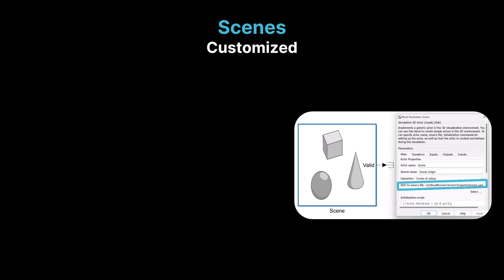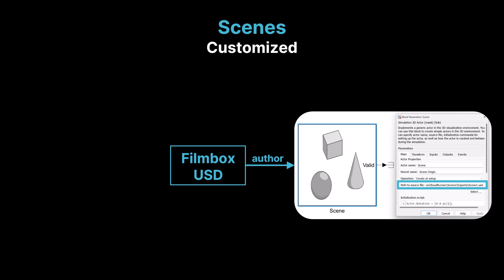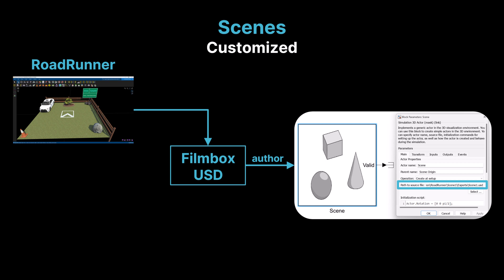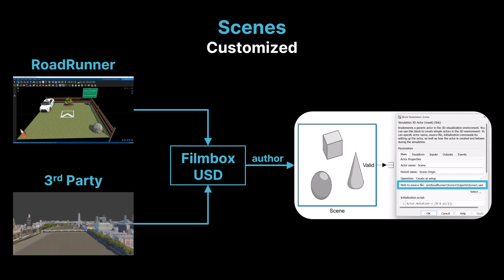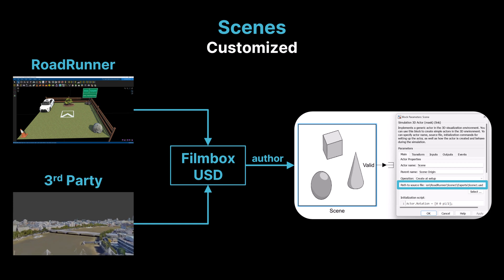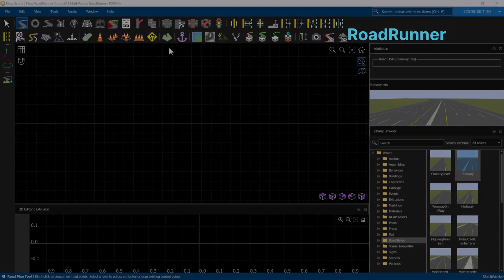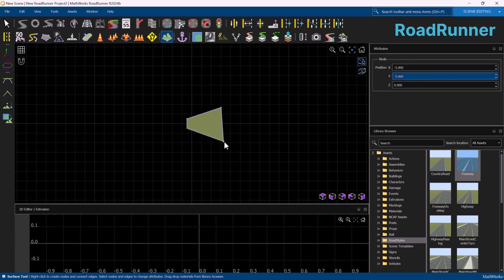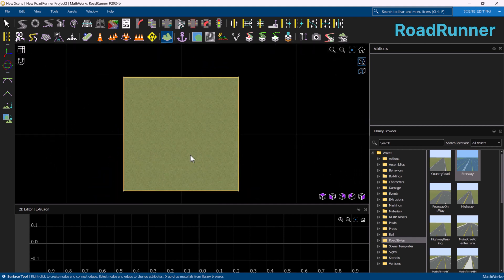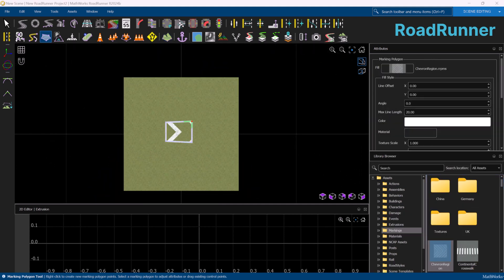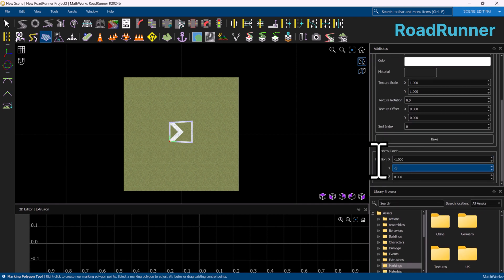We can also import custom scenes by specifying the path of the source file in the Simulation 3D actor block. The source files can either be filmbox (.fbx) or USD (.usd) files. One option is to use Roadrunner, a MathWorks product designed for creating 3D scenes and road networks. Alternatively, you can use third-party tools like Blender or obtain assets from online marketplaces that provide filmbox or USD files. In this example, we demonstrate how to create a simple yet realistic 3D scene in Roadrunner, a powerful tool for designing 3D simulation environments.